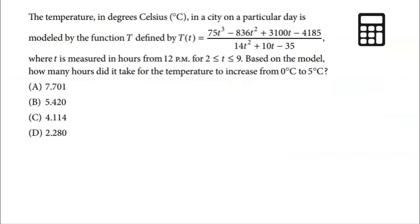The last question is from the calculator section — noted with a calculator icon. The temperature in degrees Celsius in a city can be modeled by a given rational function with a cubic numerator and quadratic denominator, where T is measured in hours starting at 12 PM for values from 2 to 9. The question asks how many hours it took for the temperature to increase from zero degrees to five degrees. Trying to solve this by hand would be far too complicated, so we'll use a calculator.